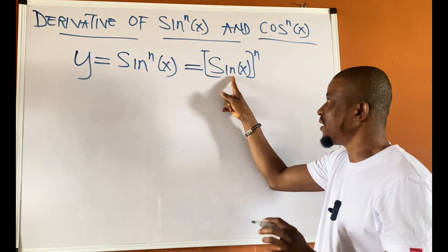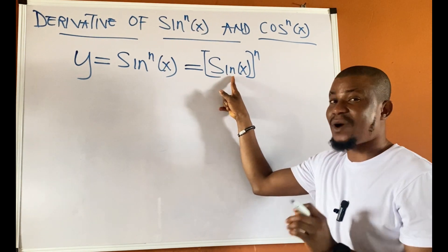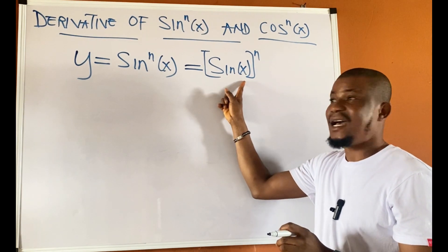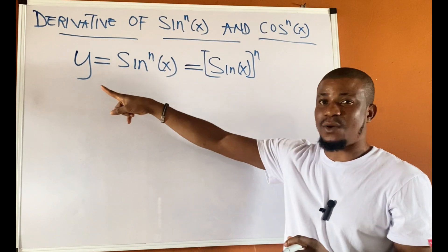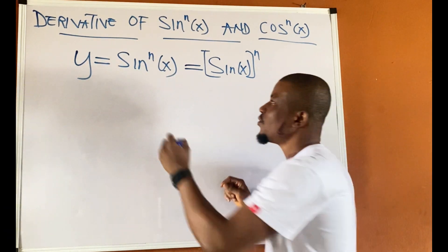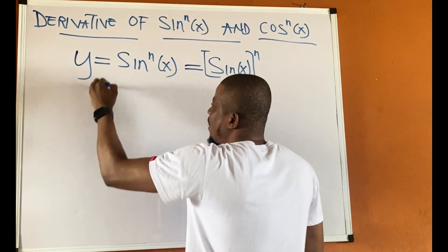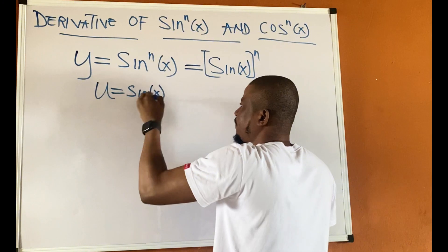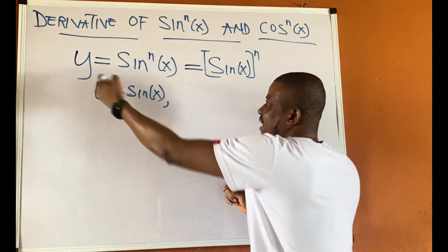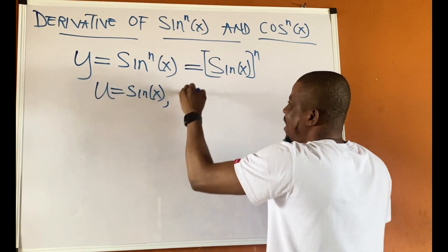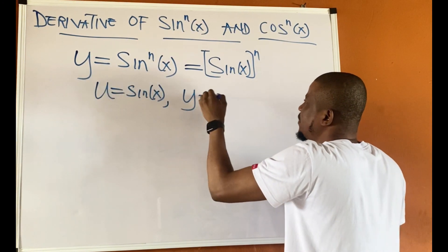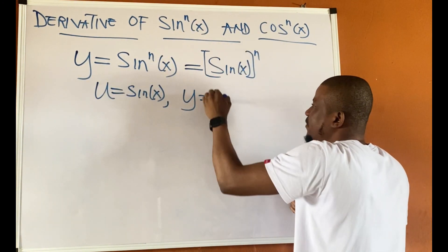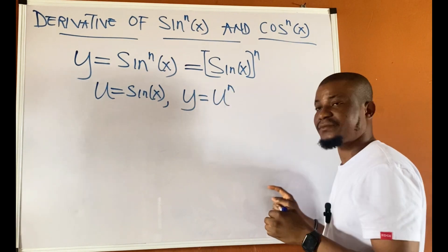We can quickly identify our u to be sine x. So from this our u is sine of x, and then we can write y to be u to the power of n — u raised to the power of n.